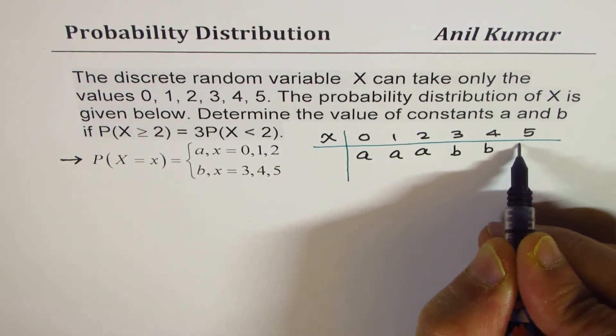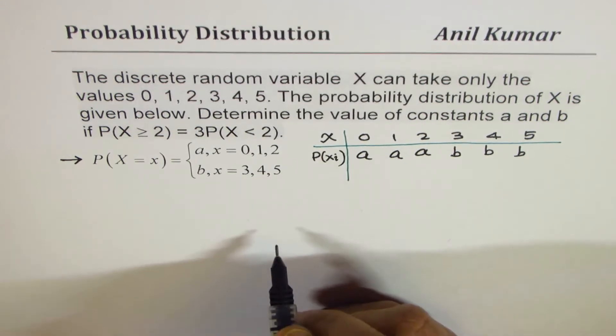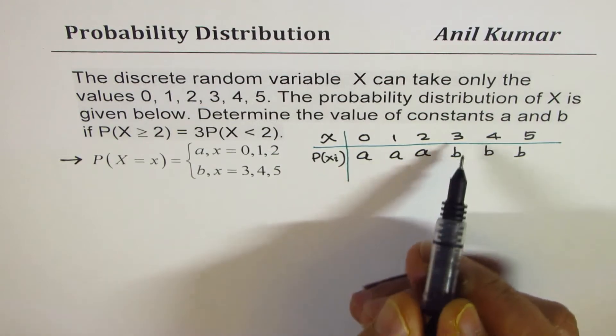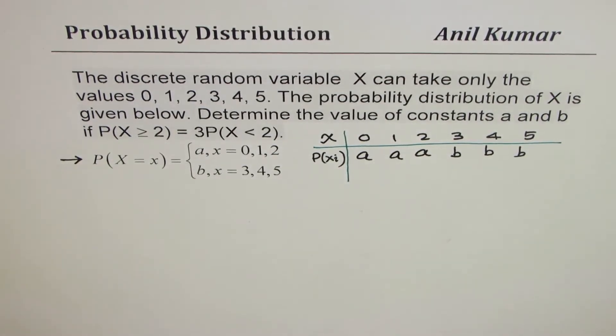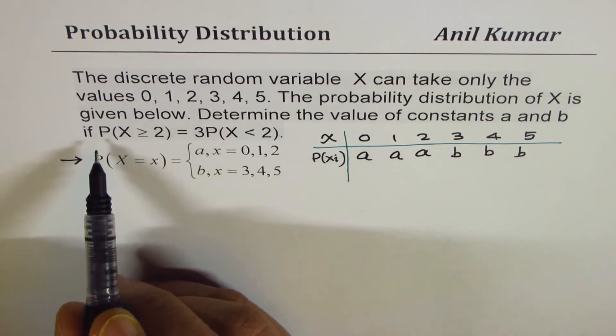For X equals 3, 4, and 5, the probability is b. That is the probability of X_i. If X_i is equal to 0, probability is a. If it is 3, it is b.